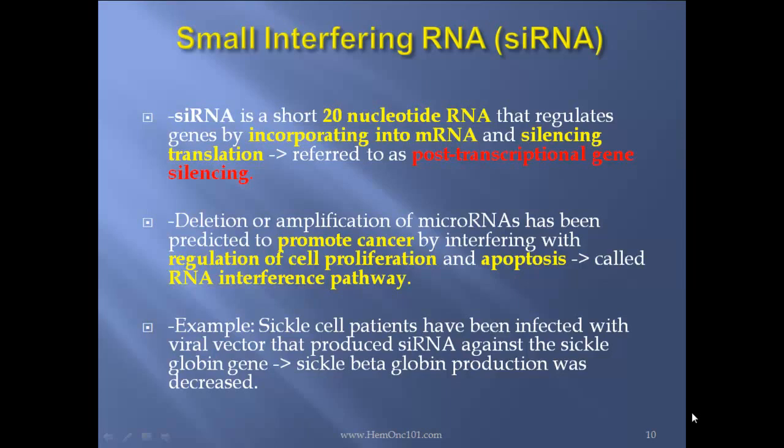As an example, patients have been infected with viral vectors that produce siRNAs against a specific gene, and in those patients, beta-globin production has been decreased.